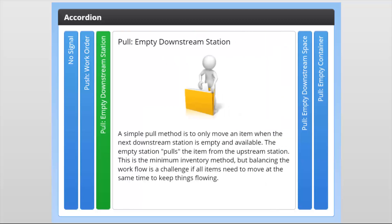Pull with an empty station. A simple pull method is to only move an item when the next downstream station is empty and available. The empty station pulls the item from the upstream station. This is the minimum inventory method, but balancing the workflow is a challenge if all items need to move at the same time to keep things flowing.